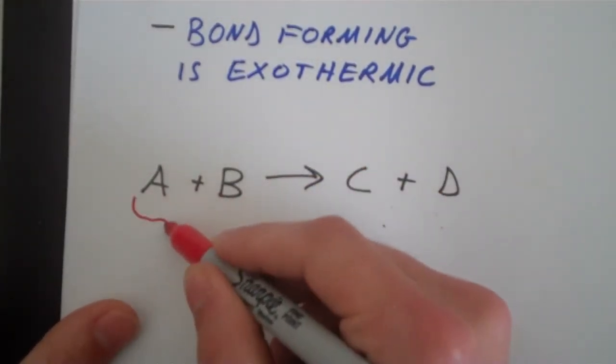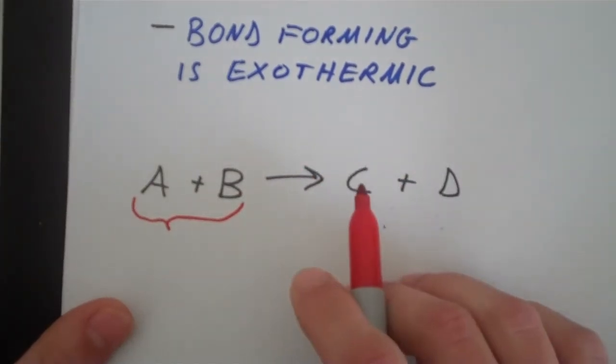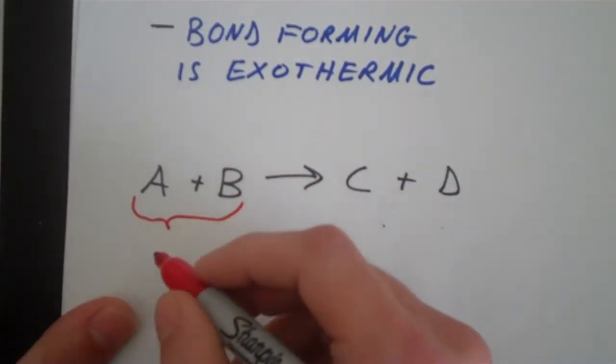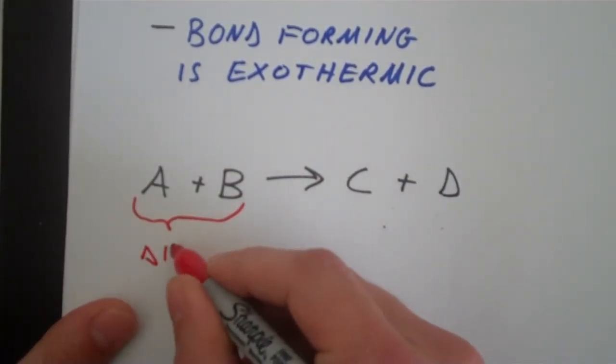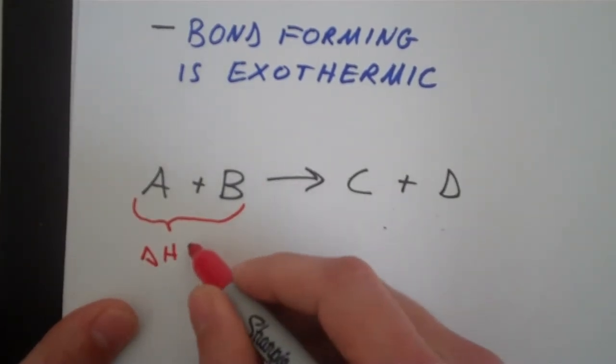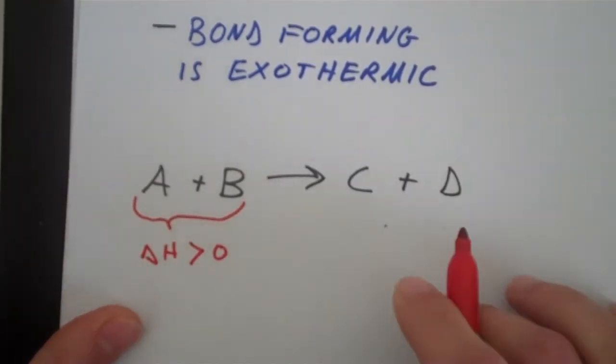You have the bonds of the reactants are breaking. That's an endothermic process. That means delta H for this process is going to be greater than zero or positive.